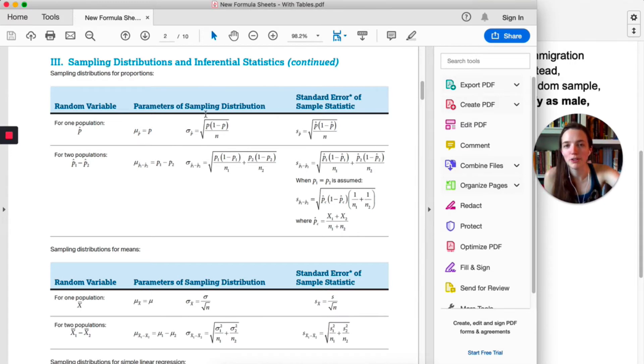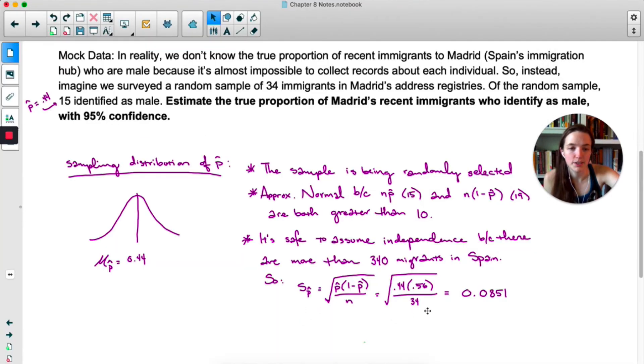Now it's been a while, but in the last unit we saw that to use the standard deviation formula for any sampling distribution you have to have independence or you have to check the 10% rule. So I would say it's safe to assume independence here because there are more than 340 migrants in Spain. So we can use the formula for standard deviation. Now if we check the formula sheet in the last unit when we dealt with sampling distributions of P hat we used this formula. But we don't know what P is. The whole point of this problem is to estimate it. So we're going to use P hat in place of P. It's the exact same formula but we're using P hat which makes this the standard error instead of the standard deviation. So I've plugged all that in here. The standard error is 0.0851.